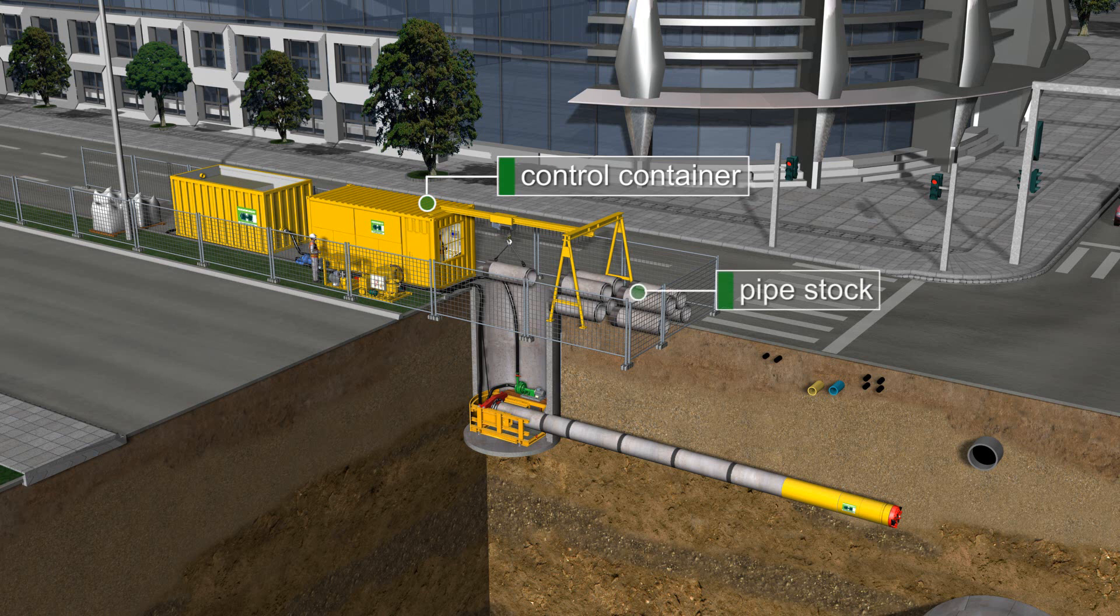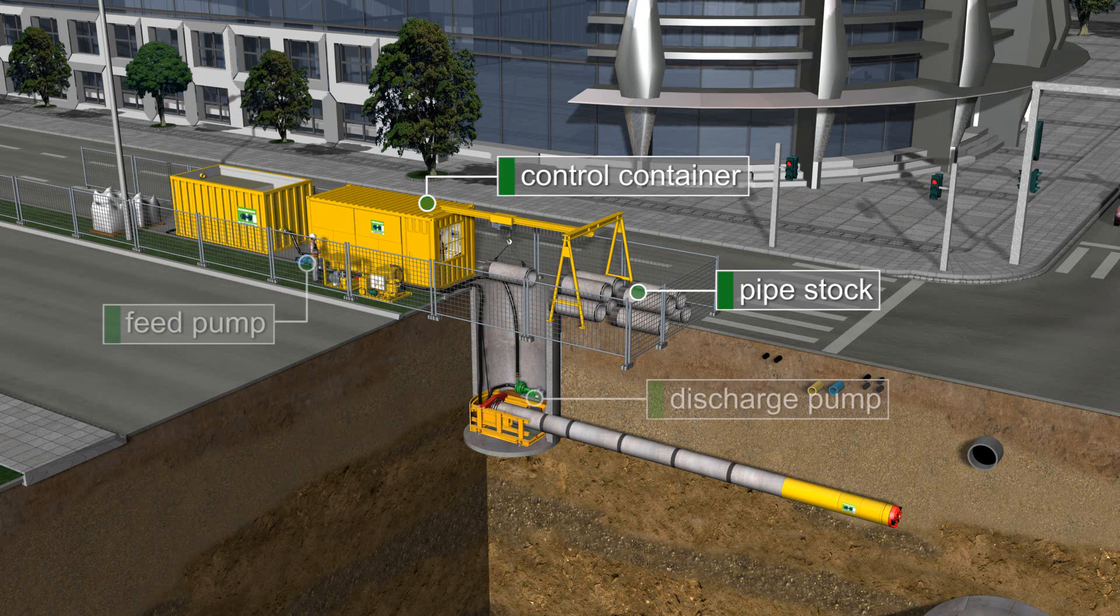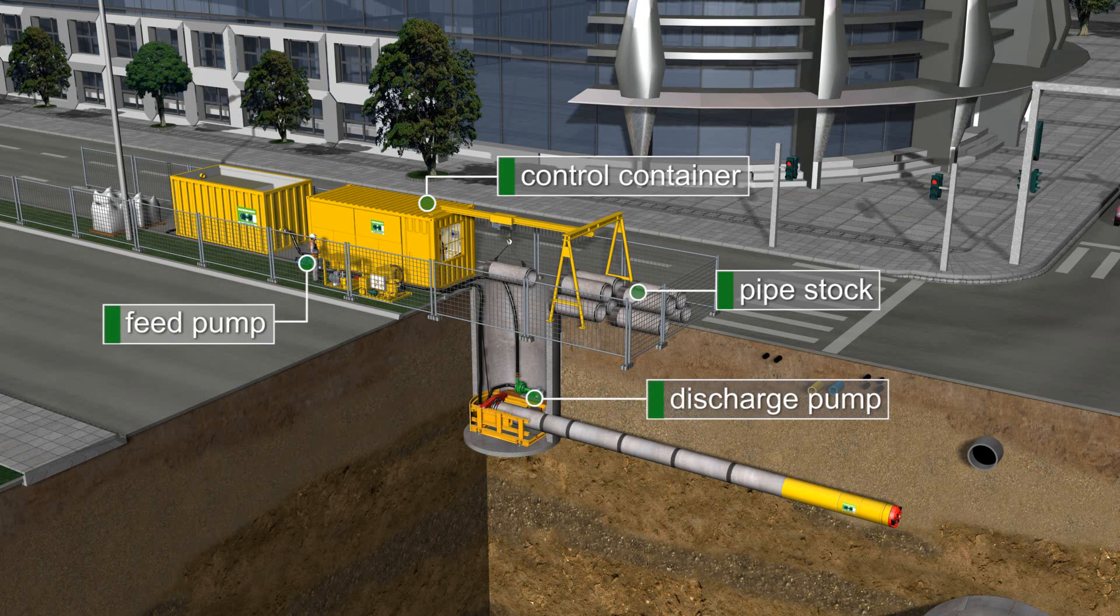A pipe stock is then established and maintained in front of the shaft to feed the shaft crane. The slurry feed pump and the slurry discharge pump are connected between the shaft and the control container and then connected through the separation plant to form a closed slurry circuit.